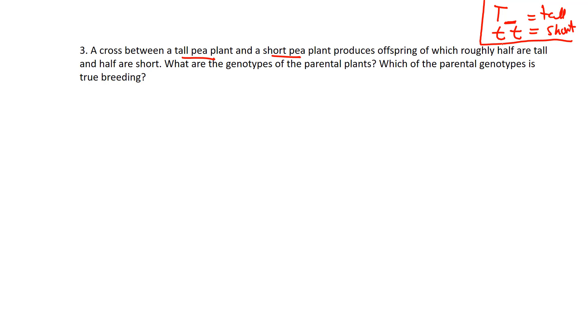A cross between a tall plant and a short plant - let's underline the parents and put their genotypes. In order to be a short pea plant, the only thing you can be, looking at our legend, is two little t's. This question is a little bit different than 2a or 2b that we did previously.